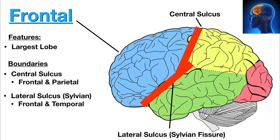The frontal lobe is the largest of the 4 major lobes of the brain in mammals, and is located at the front of each cerebral hemisphere, in front of the parietal lobe and the temporal lobe. It is parted from the parietal lobe by a groove between tissues called the central sulcus, and from the temporal lobe by a deeper groove called the lateral sulcus, or sylvian fissure.